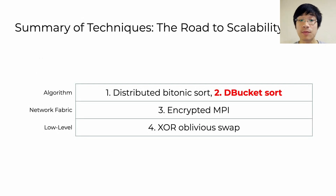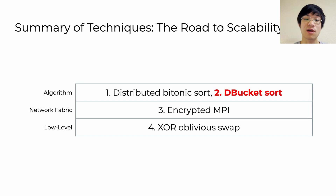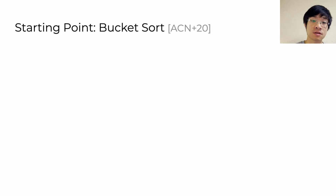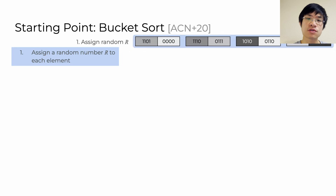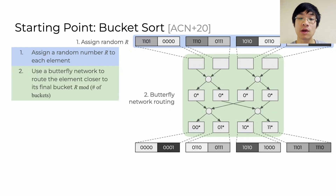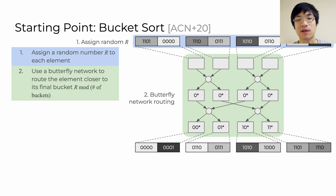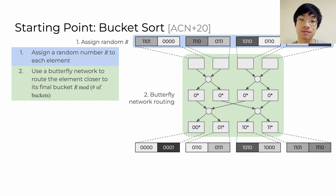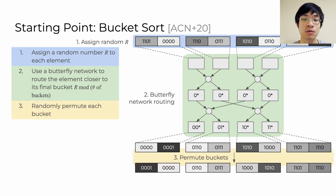To improve the scalability and performance further, we turned our attention to the bucket oblivious sort instead — after applying optimizations, we call it the DBucket sort. Bucket sort is a little more complicated, so we'll go through it more slowly. First, we actually need to shuffle the input data. We do this by assigning a random number to each element, and then we route each element towards its final sorted position according to that random number using a bucket butterfly routing network. Each bucket holds elements according to the first two bits of the random key — 00, then 01, and so on — and then we randomly permute each individual bucket to achieve a fully random permutation.